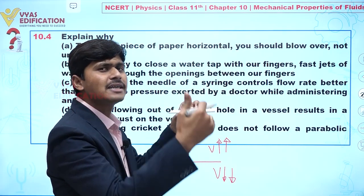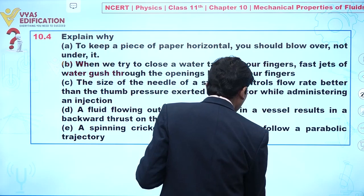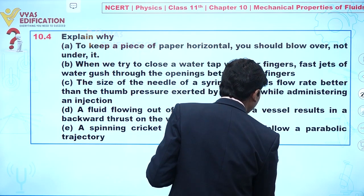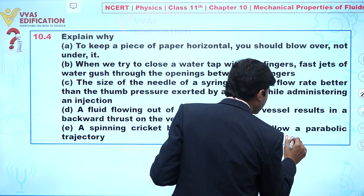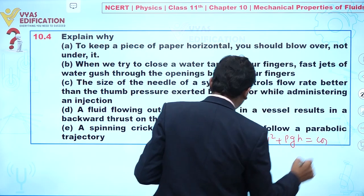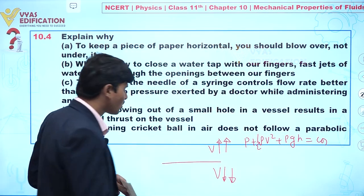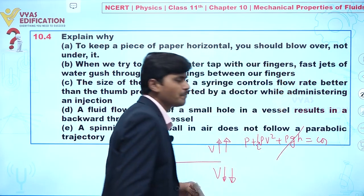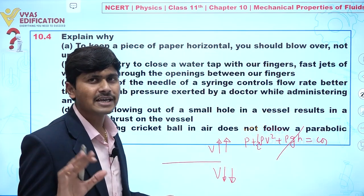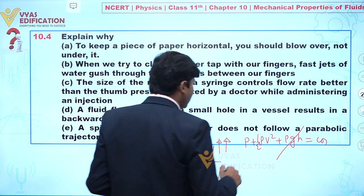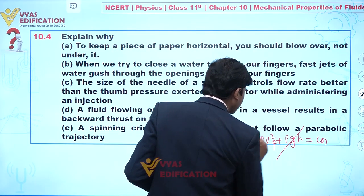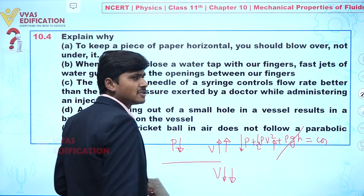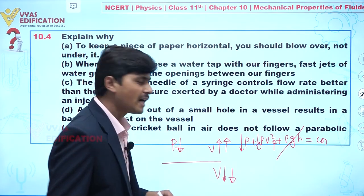When velocity is increasing, we know from Bernoulli's equation — p + ½ρv² + ρgh = constant. Since the height difference is negligible, the ρgh term does not contribute significantly. Therefore, if velocity is increasing on the top, we can see that pressure decreases on the top part.